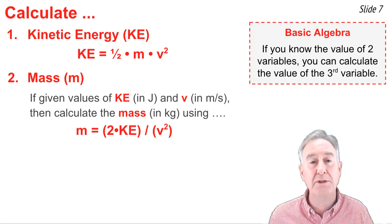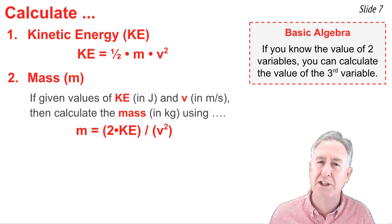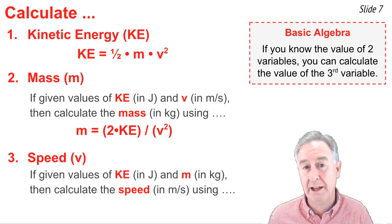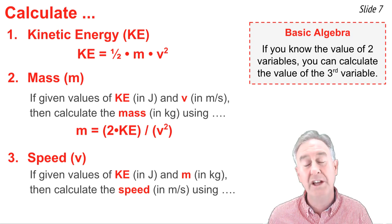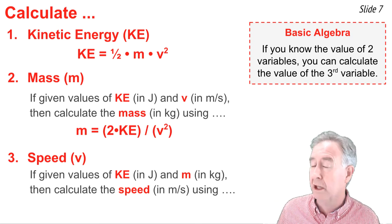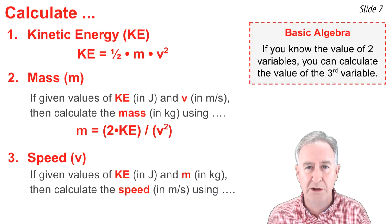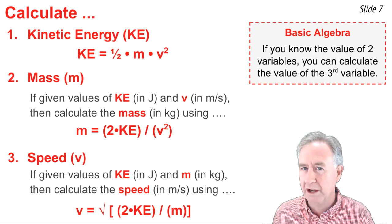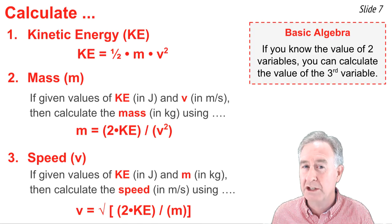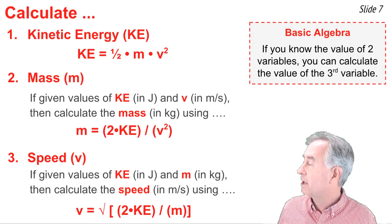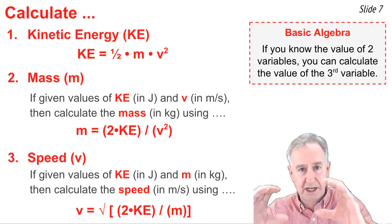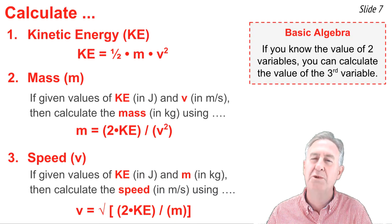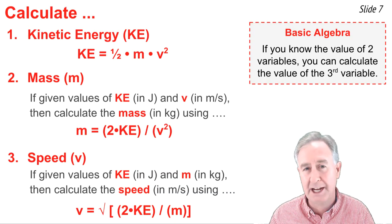And what if you know the kinetic energy and the mass? How would you solve for the speed? Well, you'd again have to rearrange the formula in order to get the speed value by itself. It would look something like this: v equals the square root of 2 times the kinetic energy divided by the mass. The basic idea is that you would find everything inside the brackets. You'd go 2 multiplied by KE, divide by the mass, and then you would take the square root of that entire quantity.